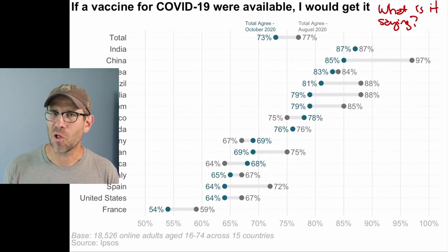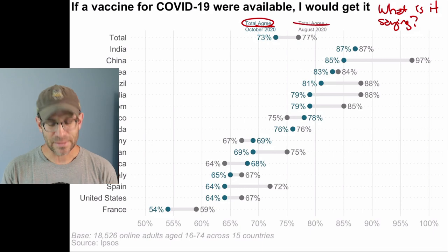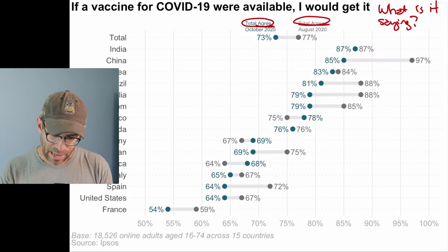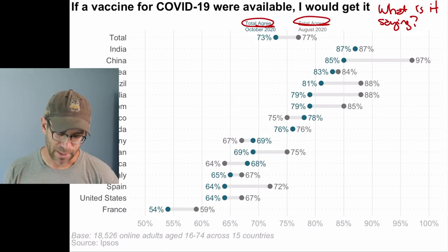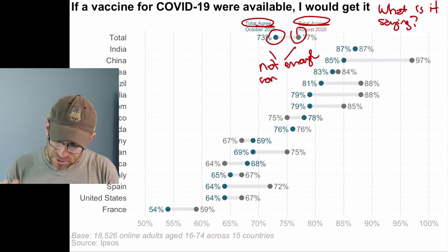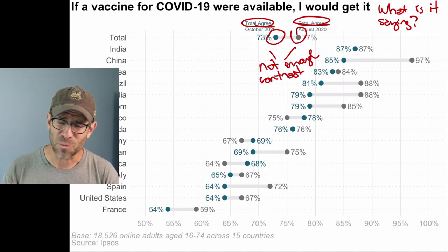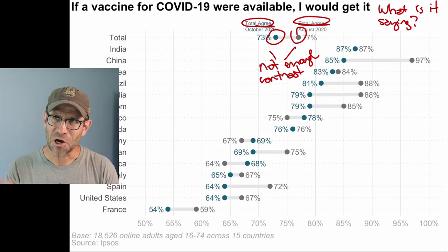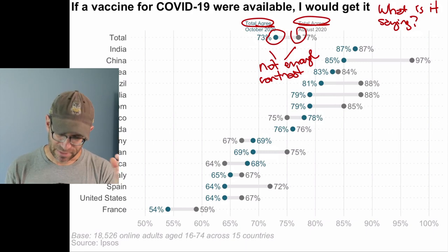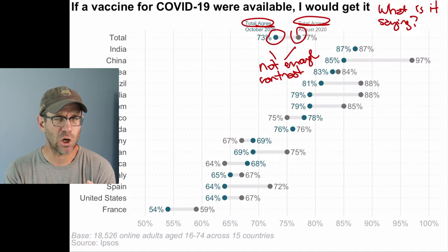My next two critiques come back to the fact that I don't like clutter in figures. When I look at the legend, I have two problems: first, 'total agree' is repeated for both the October and August captions. I kind of liked the legend format as an alternative to having it off in the right-hand margin. The other challenge is there's not enough contrast in the colors between October and August data — I kept struggling to remember which was which. After making seven videos about this figure, I finally remembered that gray is August and blue is October.